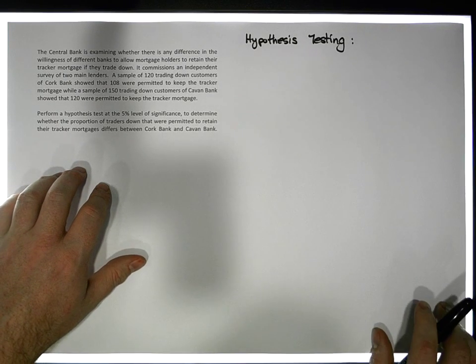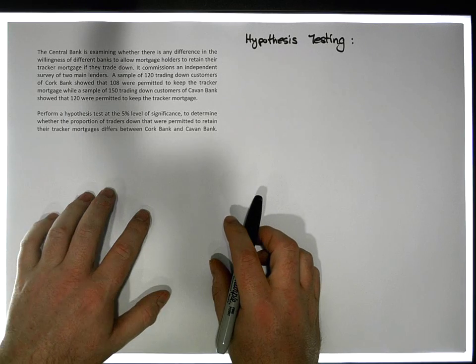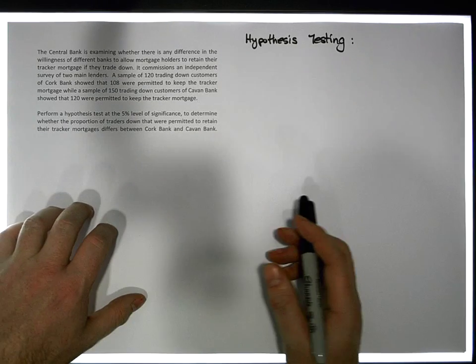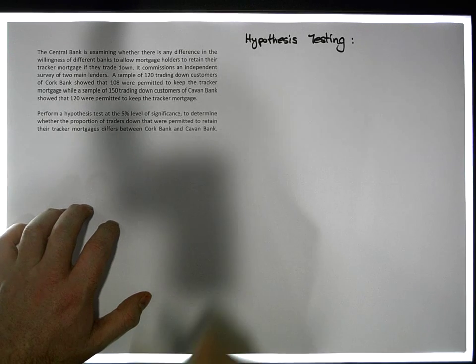Hi guys, this is Jonathan Lambert with the Mathematics Development and Support Service at the National College of Ireland. This short video is going to be another video in our second set of videos dealing with hand calculations associated with hypothesis tests.